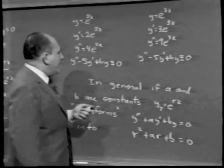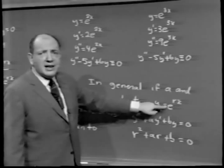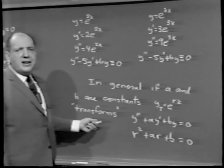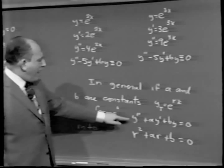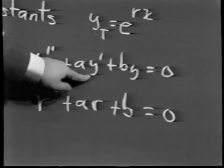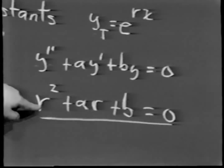In general, if a and b are constants, the substitution y sub t equals e to the rx transforms the second-order differential equation y double prime plus a·y prime plus b·y equals 0 into the equivalent quadratic equation r squared plus a·r plus b equals 0. Using the quadratic formula, we can find the values of r that satisfy this, giving a couple of solutions to the equation.